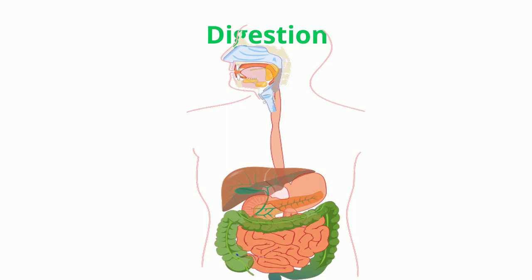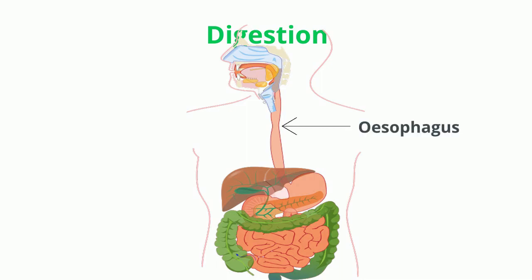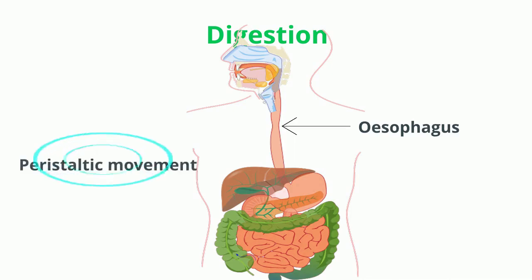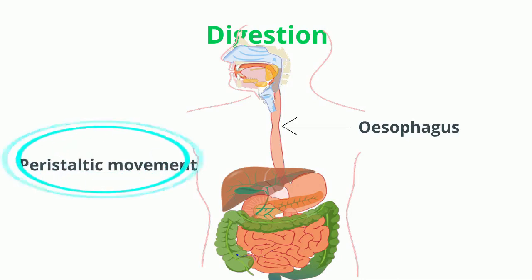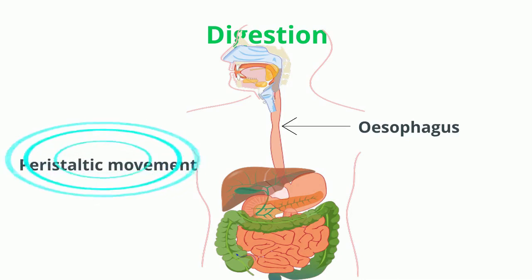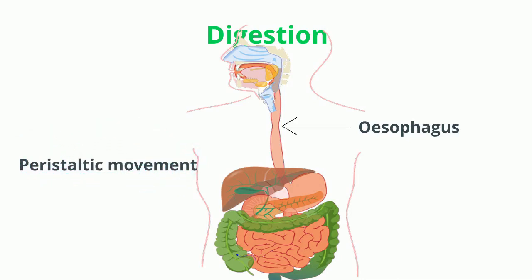The pharynx is about 12 cm long and is a funnel-shaped vertical canal that acts as a passage from the buccal cavity to the esophagus. The esophagus is a long tubular structure which carries food from the pharynx to the stomach by peristaltic movement. The movement of contraction and relaxation of the walls of the esophagus which pushes food into the stomach is called peristaltic movement.